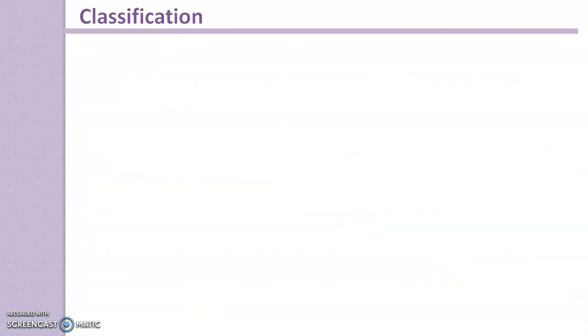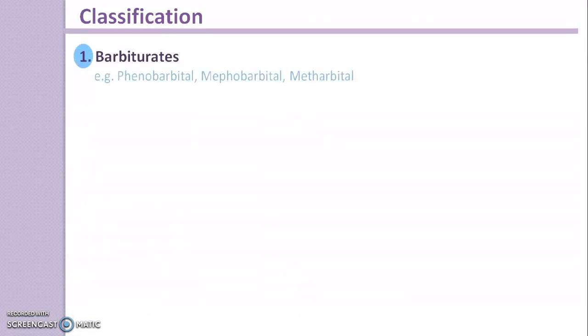In the next slide, we discuss the classification. The first class is Barbiturates. Examples are Phenobarbital, Mephobarbital, and Metharbital.